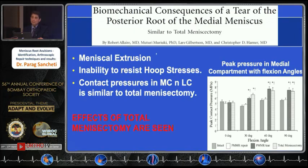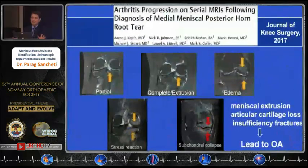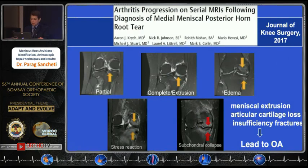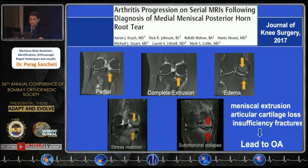The contact pressures in the compartments are nearly equivalent to that of when a total meniscectomy is done — therefore you have to be absolutely sure that you repair these tears. Don't leave them alone. An untreated partial tear, which was easily repairable, can progress to a complete tear with extrusion, bone edema, stress reaction, articular cartilage damage, subchondral collapse, insufficiency fractures, and ultimately osteoarthritis.